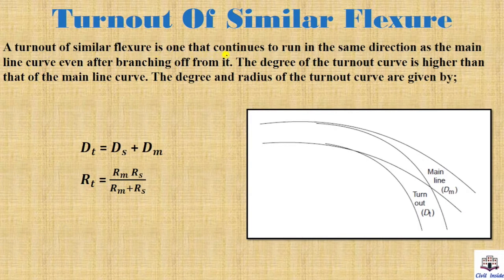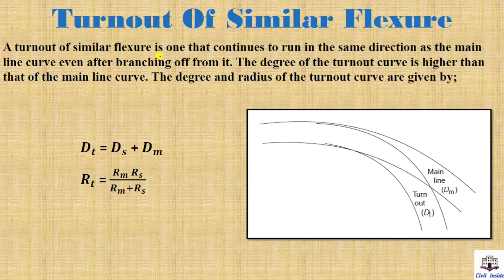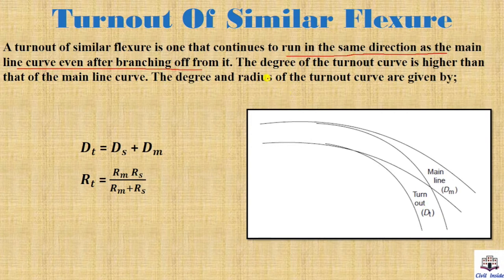Turn out of similar flexors is one that continues to run in the same direction as the main line curve even after branching off from it. The degree of the turn out curve is higher than that of the main line curve. This is an important point.